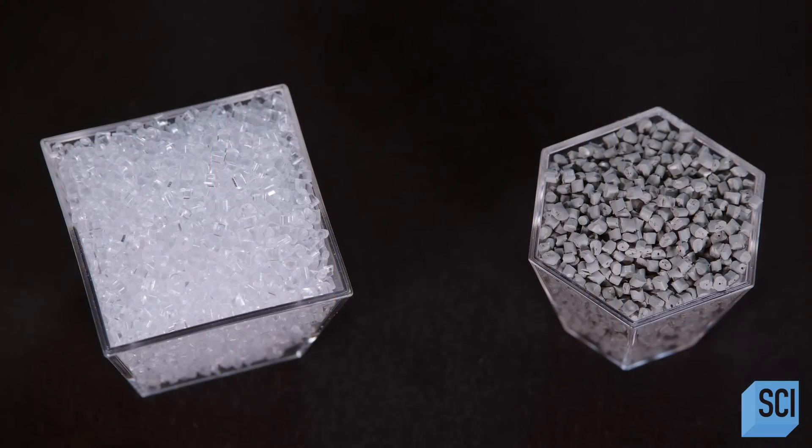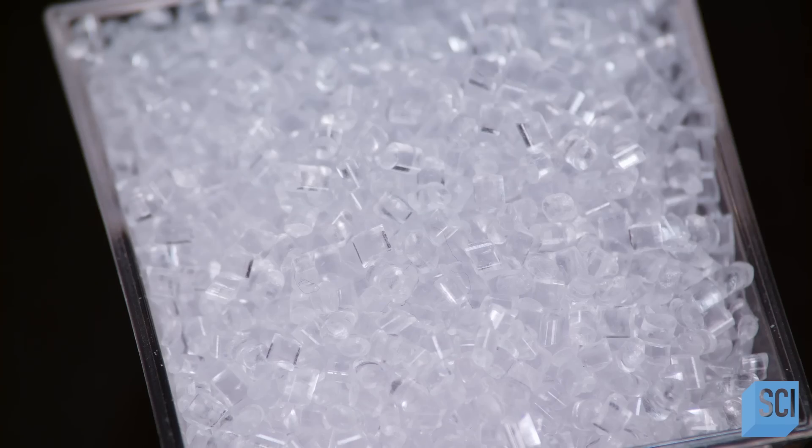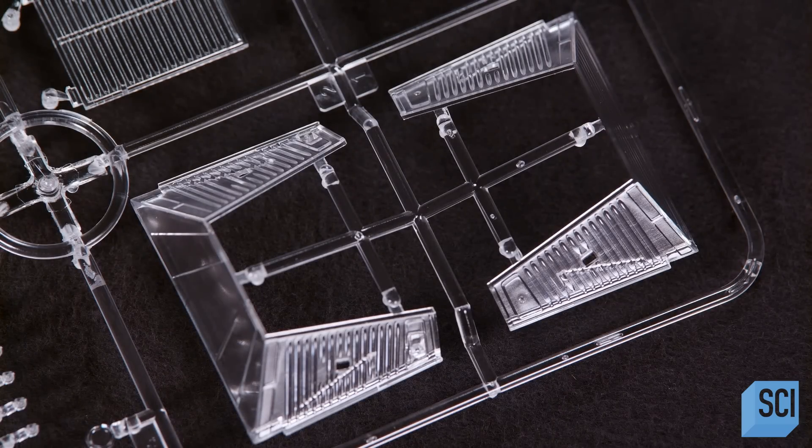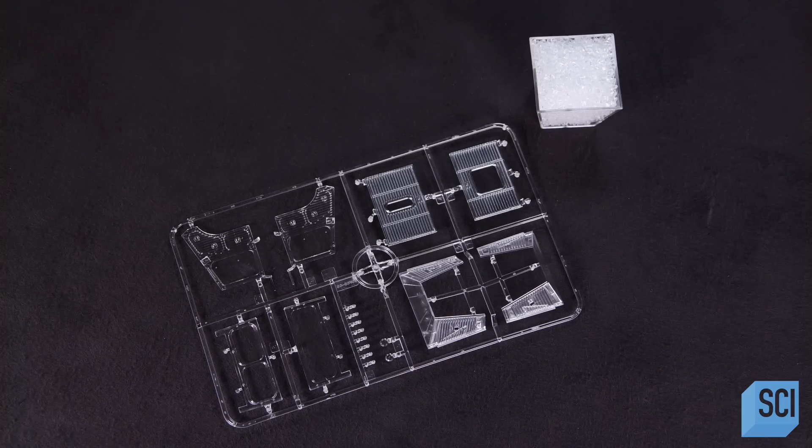Clear polystyrene is used for transparent components. The melted polystyrene is pumped under high pressure into the molds. Once the plastic hardens, a pusher ejects the parts. The connected kit parts are known as a tree.